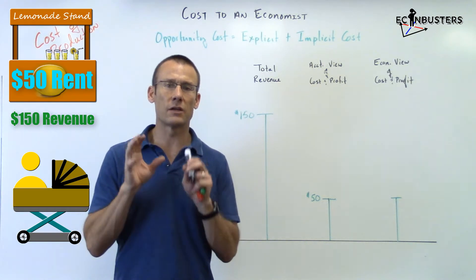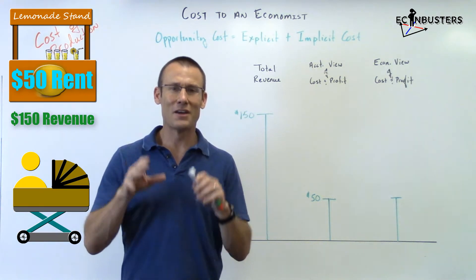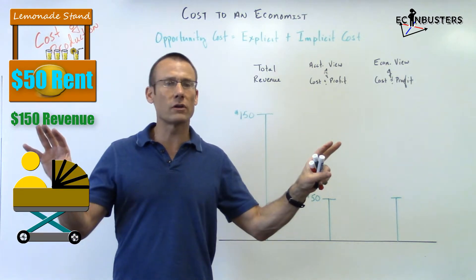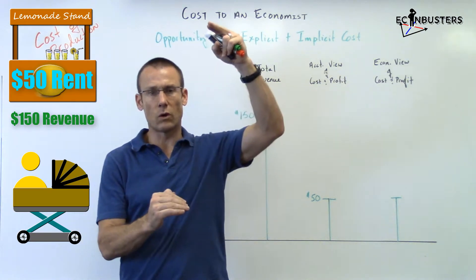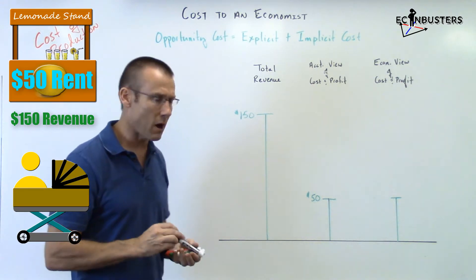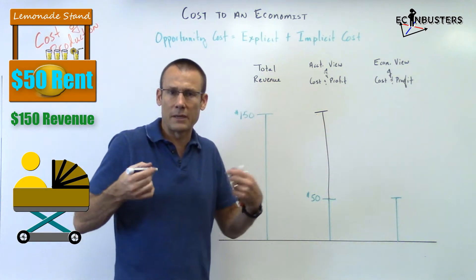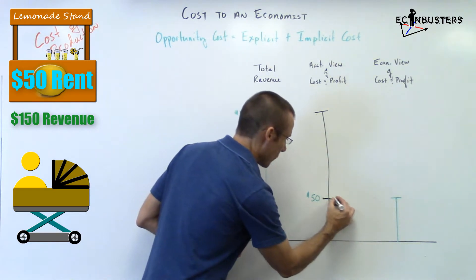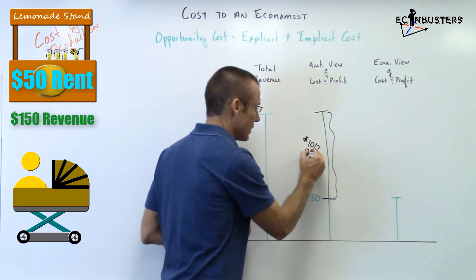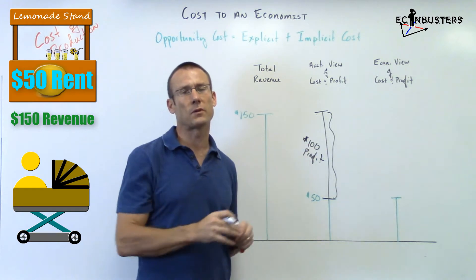Why? Because the accountant is only focused on can she do it, not should she do it. The accountant is not looking at alternatives at all. They just say: total revenue $150, cash outlay $50 — have you told me all the cash outlays? Yes. Then that's a profit of $100. I'm using a black marker because we talk about being in the black meaning making profits. So $150 minus $50 — that's the accountant's view — absolutely she can open the lemonade stand.